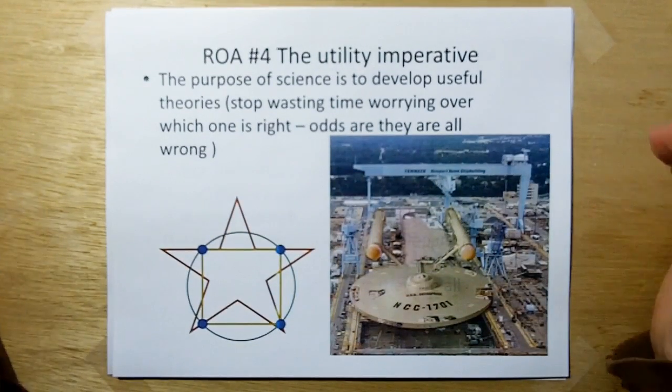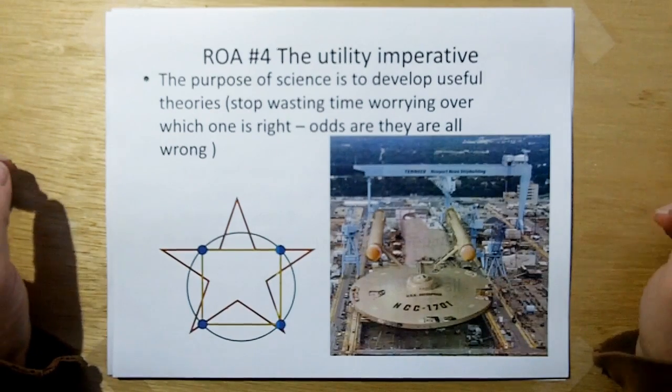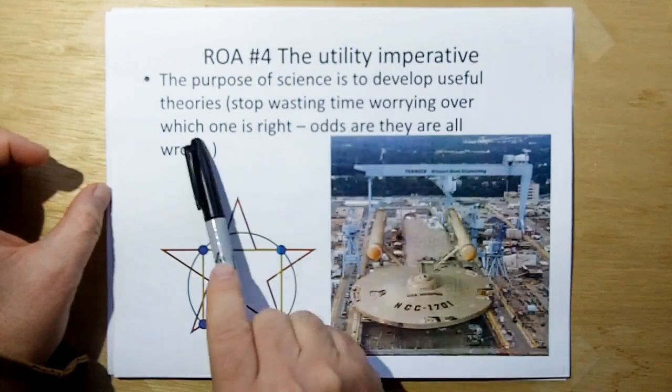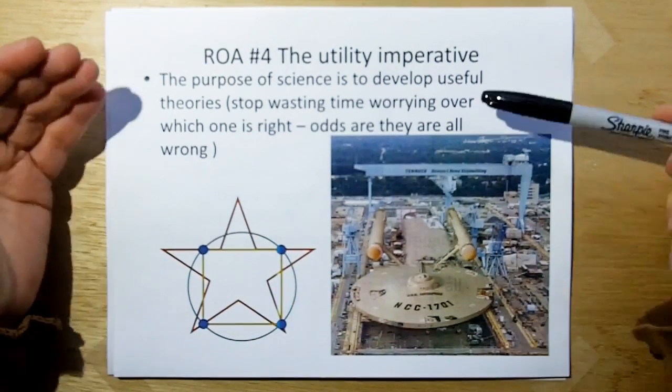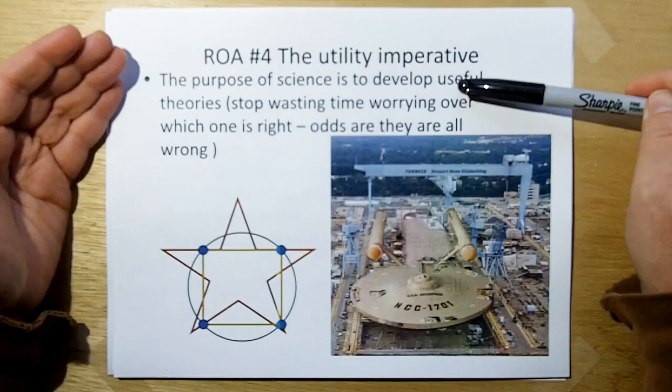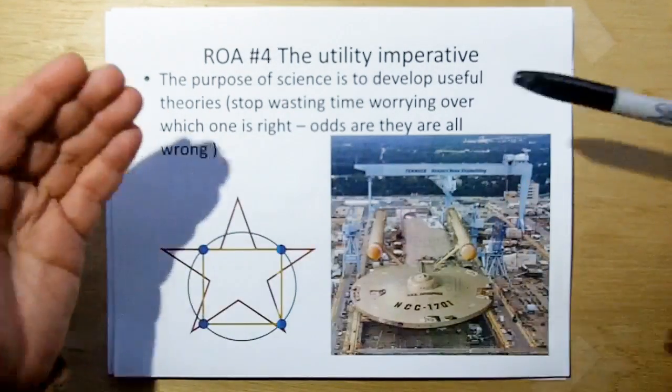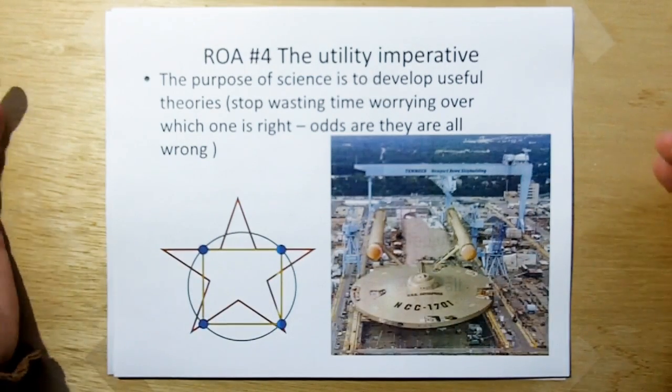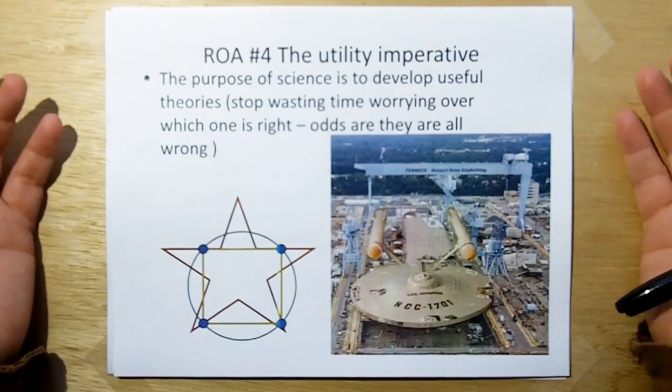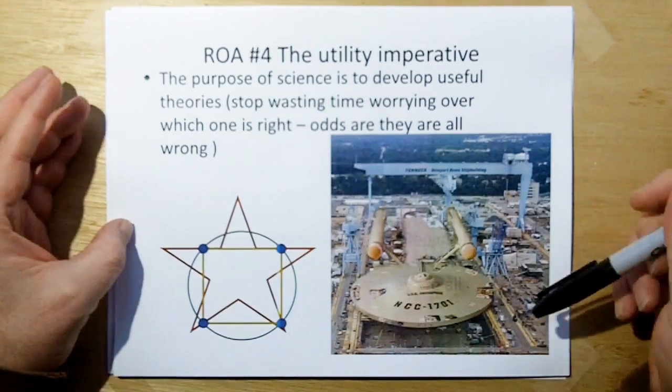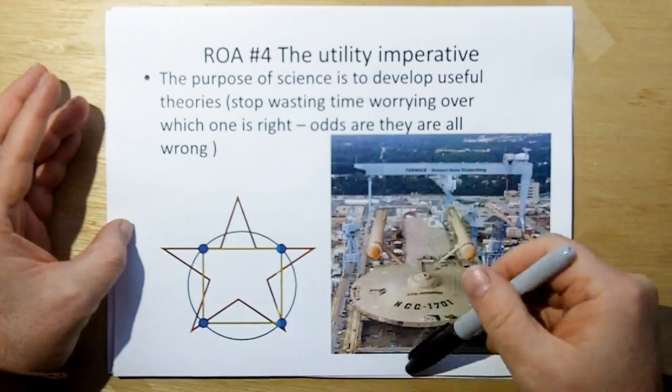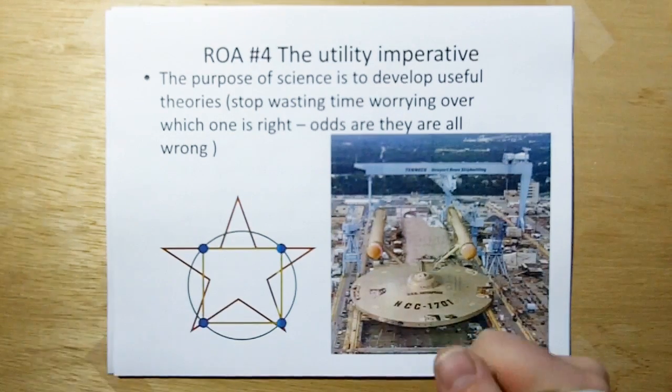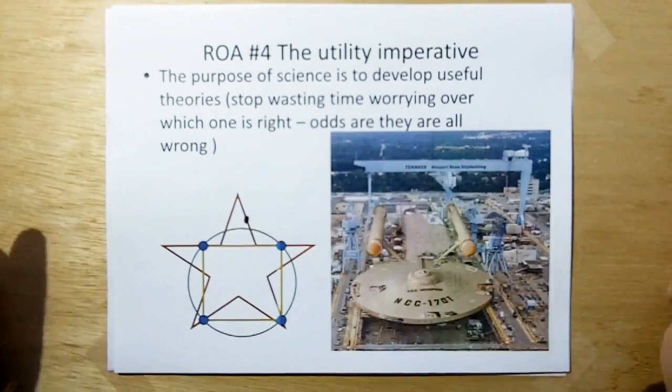So this reiterates rule of acquisition number four, the utility imperative. The purpose of science is to develop useful theories. Stop wasting time worrying over which one's right. Odds are they're all wrong. But if we can get useful theories going that are valid within our realm, that we need them to be valid and that are valid at least for the next couple of years, that are valid or at least where we need to go in the immediate future, then we can develop machines and tools to help expand our footprint to see where these theories break down or where they're not true. And then we can come up with the other observations to select one over the other. That's part of my gateway feedback theory of science.